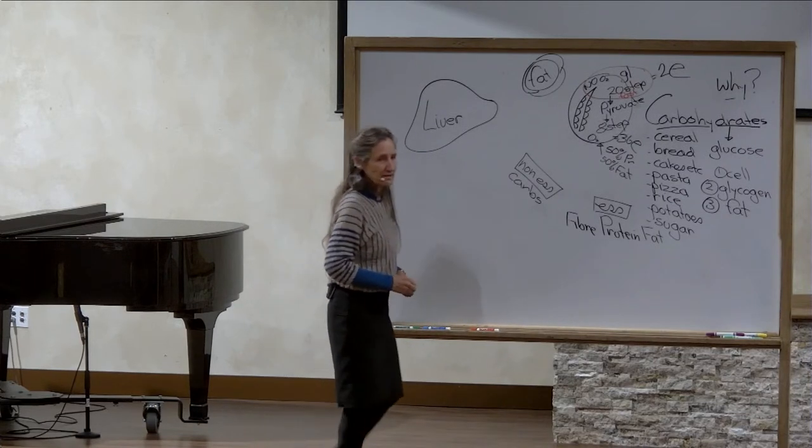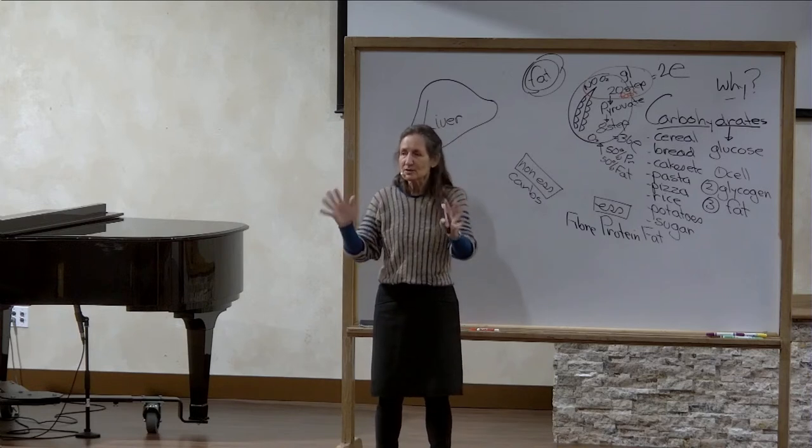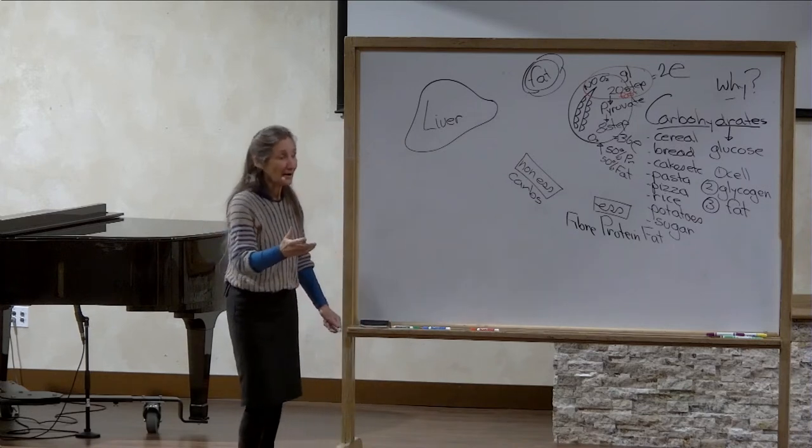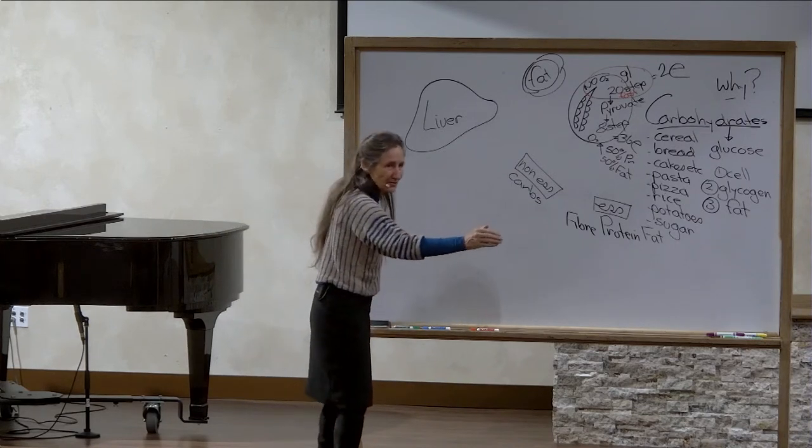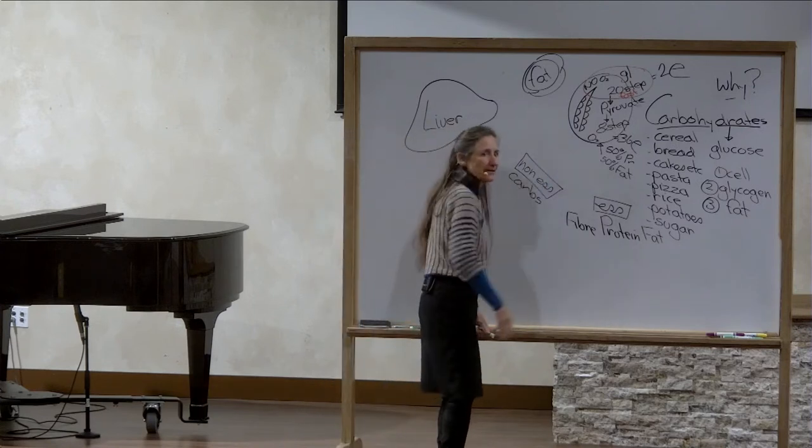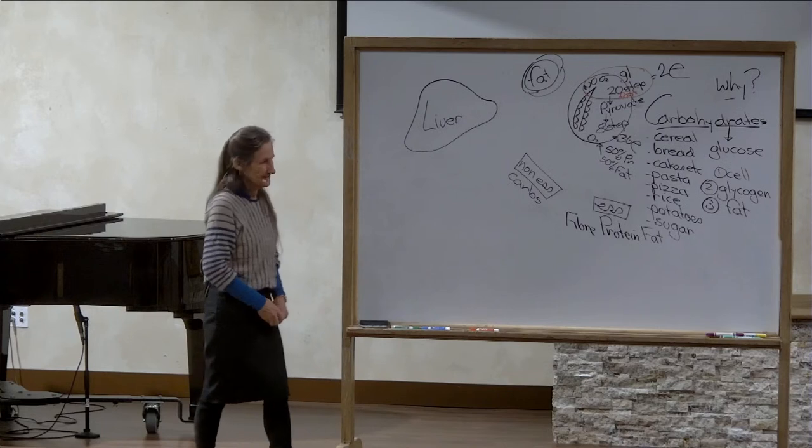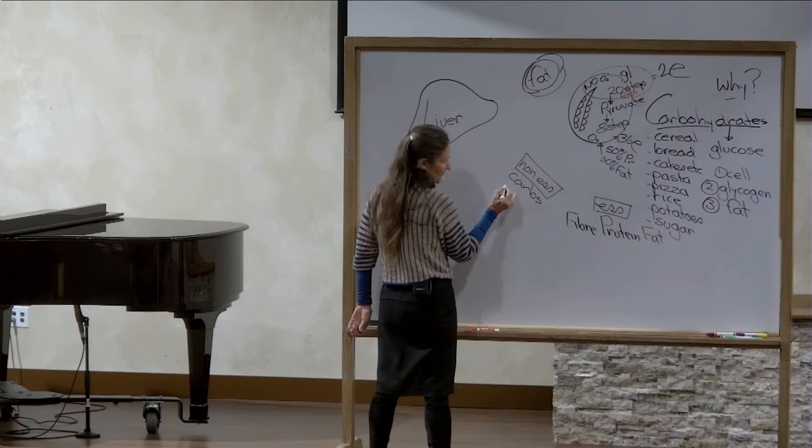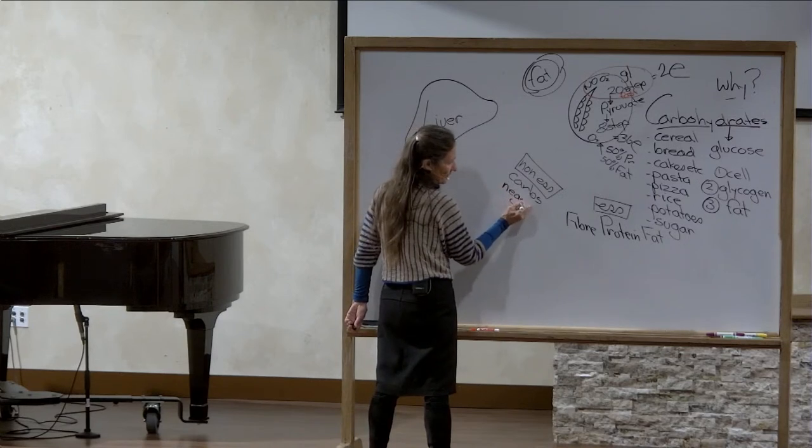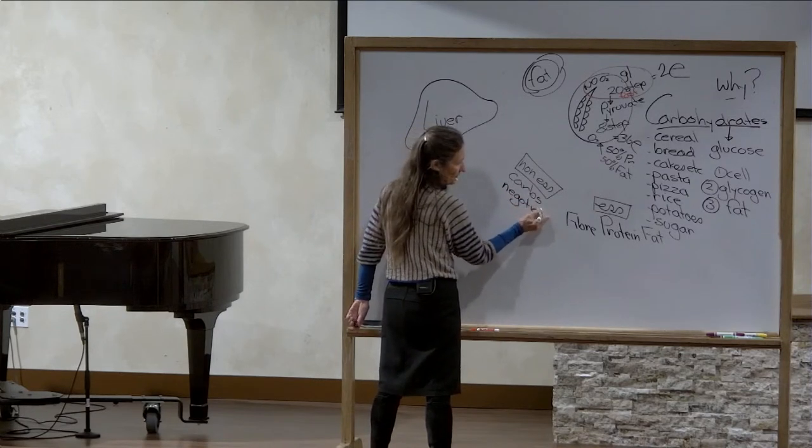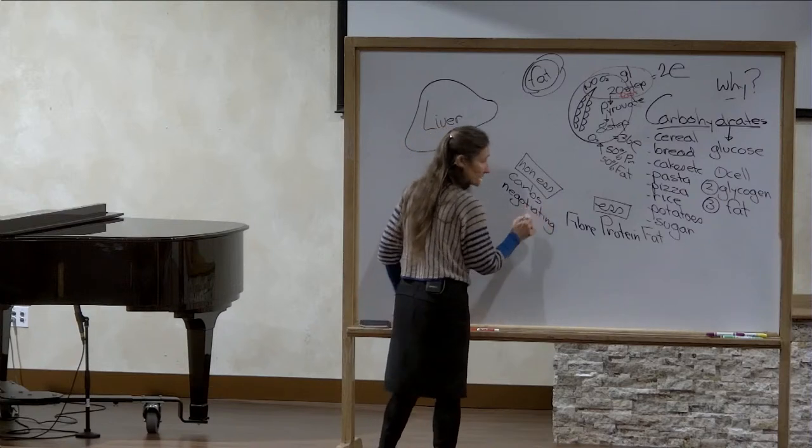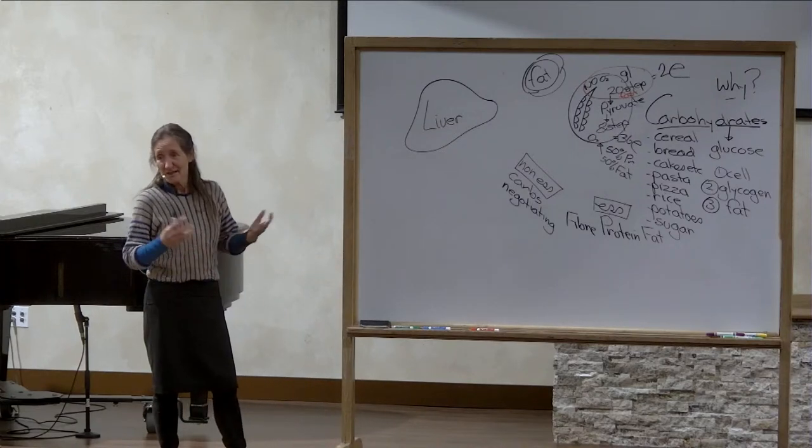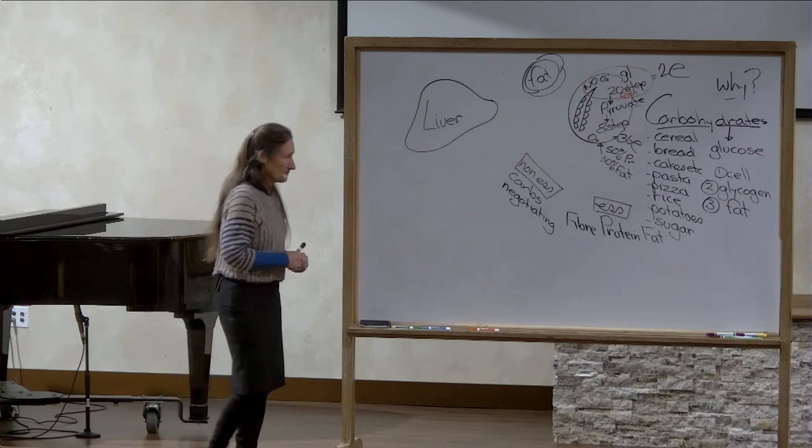When people come to our retreats I say get your cupboards well-stocked, so that when you do come home hungry you've got something there that you can cook that's not just bread and cereal and cakes. Because the carbohydrates are the non-essential that's your negotiating part of the meal and the negotiations change depending on your height, your size, your weight, your genes, your health status.